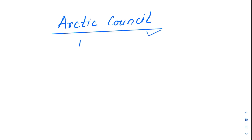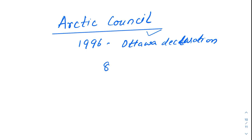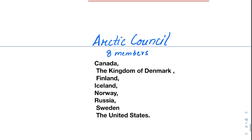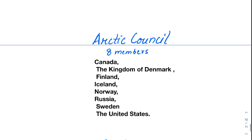The Arctic Council was formed in 1996 through the Ottawa Declaration. There are eight members in this intergovernmental organization, which looks after the issues faced by Arctic countries and the indigenous people there. These countries are Canada, the Kingdom of Denmark (which includes Greenland and the island of Faroe), Finland, Iceland, Norway, Russia, Sweden, and the United States.